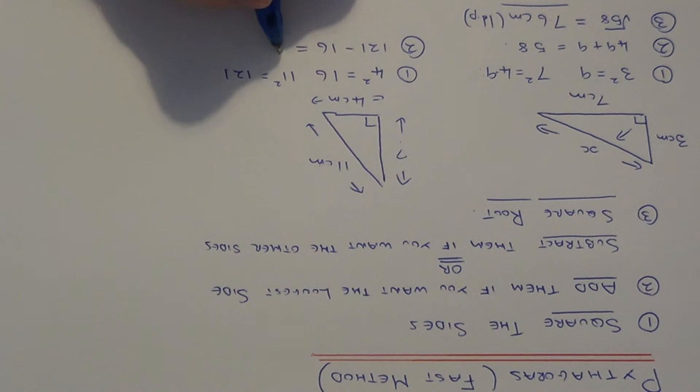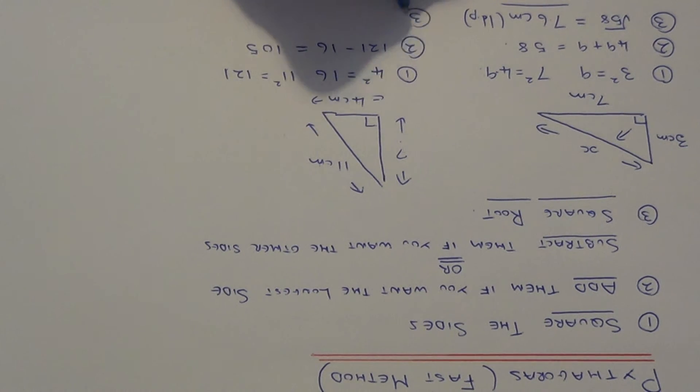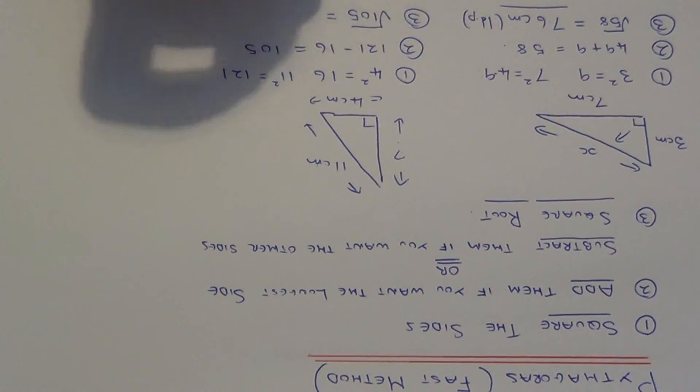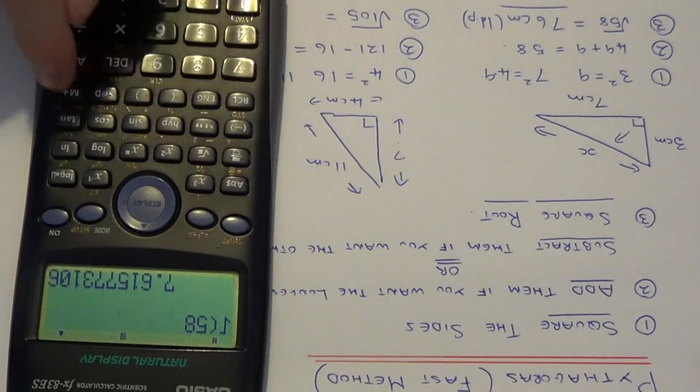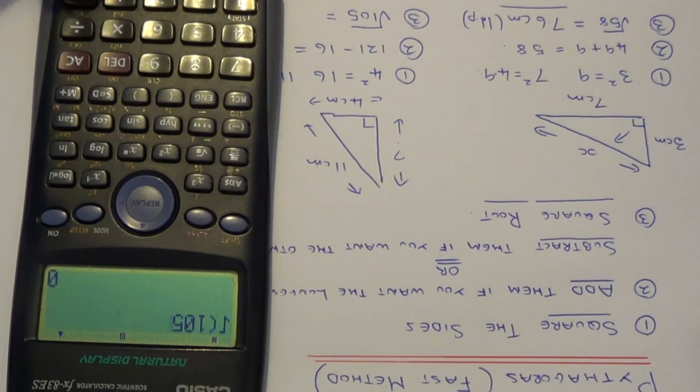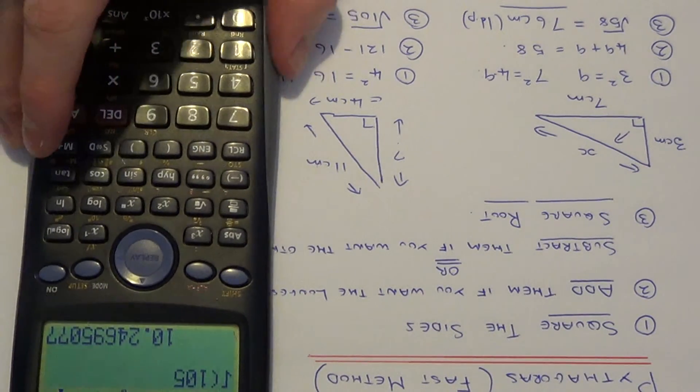This gives a hundred and five. And then the final step again. All we need to do now is square root of a hundred and five. So if you get your calculator for this one, a hundred and five square rooted is ten point two.